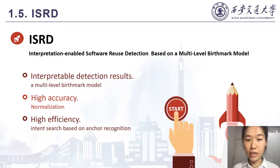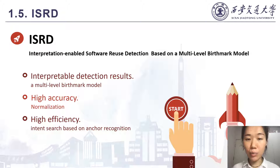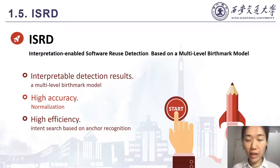To overcome the three limitations, we propose ISRD, a novel interpretation-enabled software reuse detection approach based on a multi-level birthmark model, which holds the following advantages. ISRD is capable of capturing program semantics from coarse granularity to fine granularity and uniquely identifying a program with a multi-level birthmark model. To achieve high accuracy of reuse detection, we perform normalization at different levels of our birthmark model. To speed up the similarity calculation among thousands of function pairs, we propose a precise intent search based on anchor recognition.